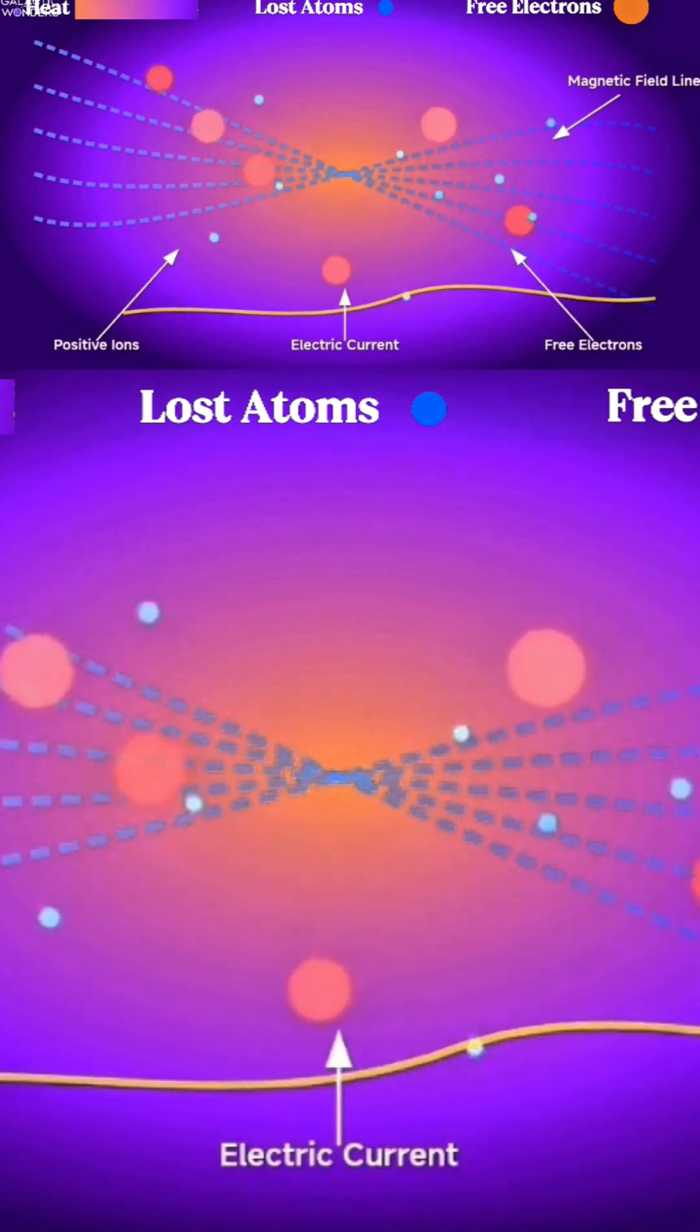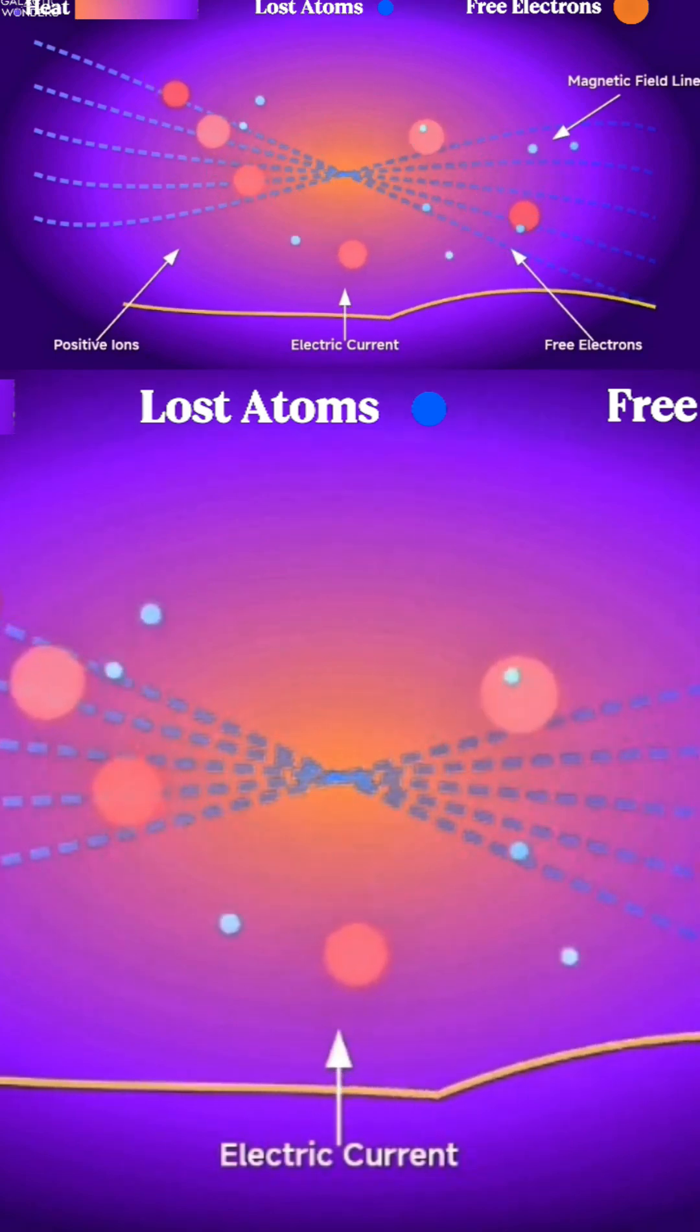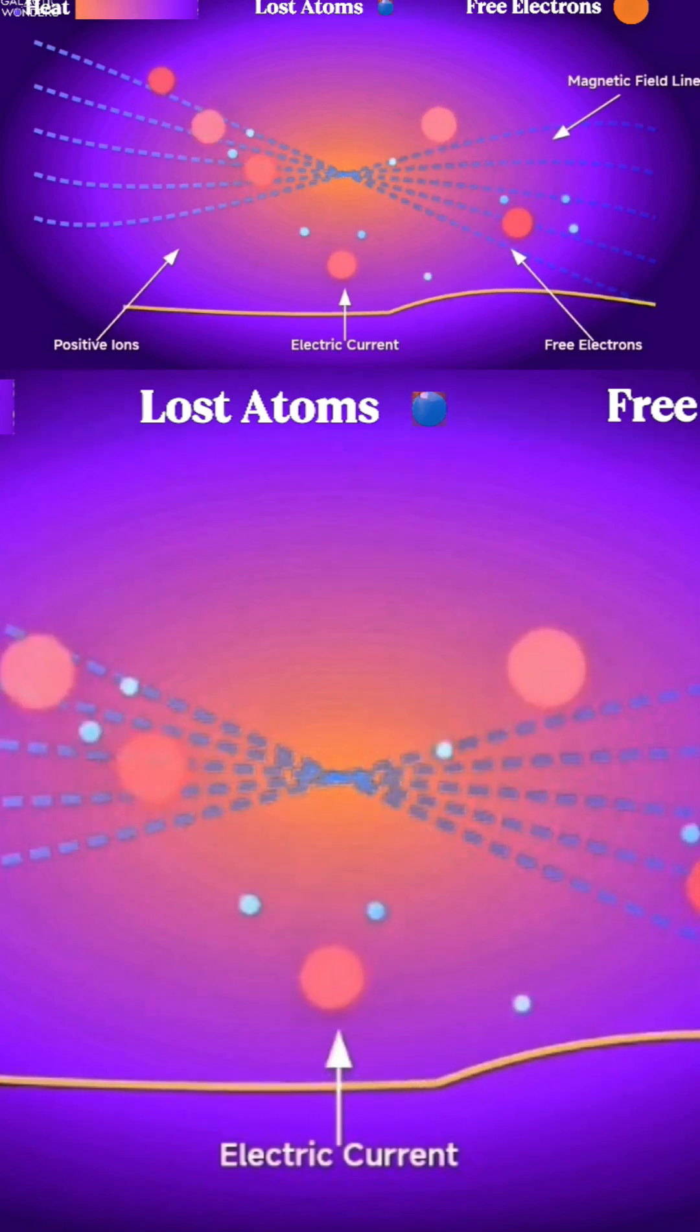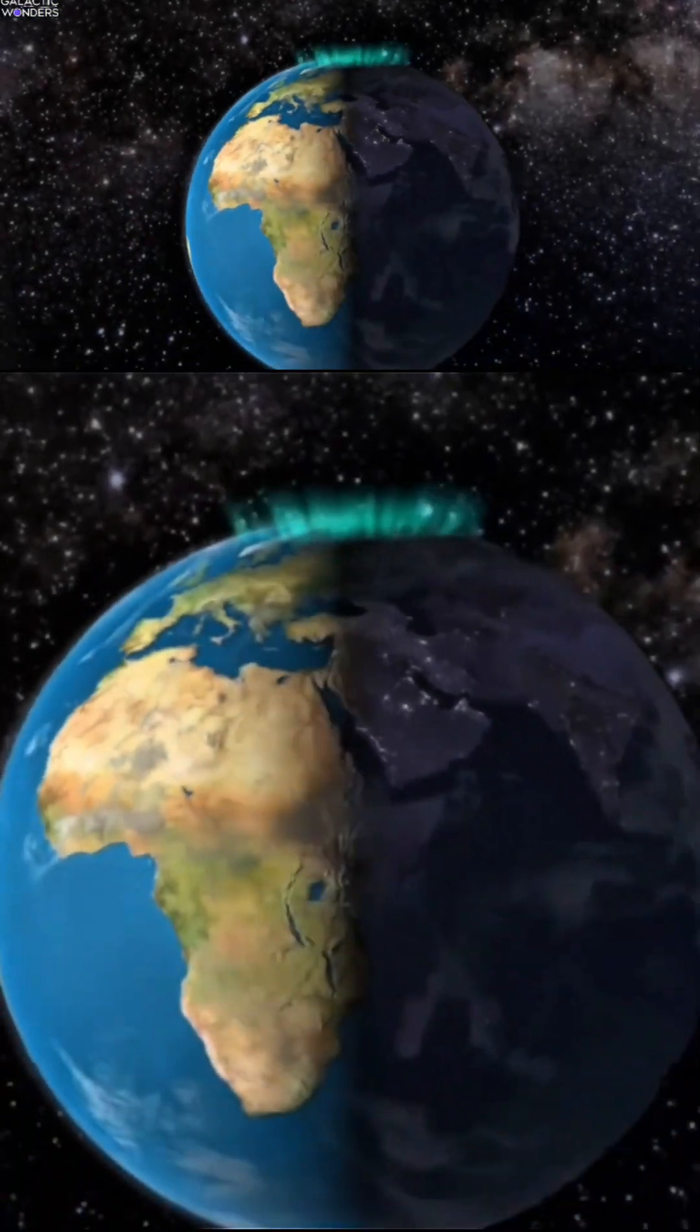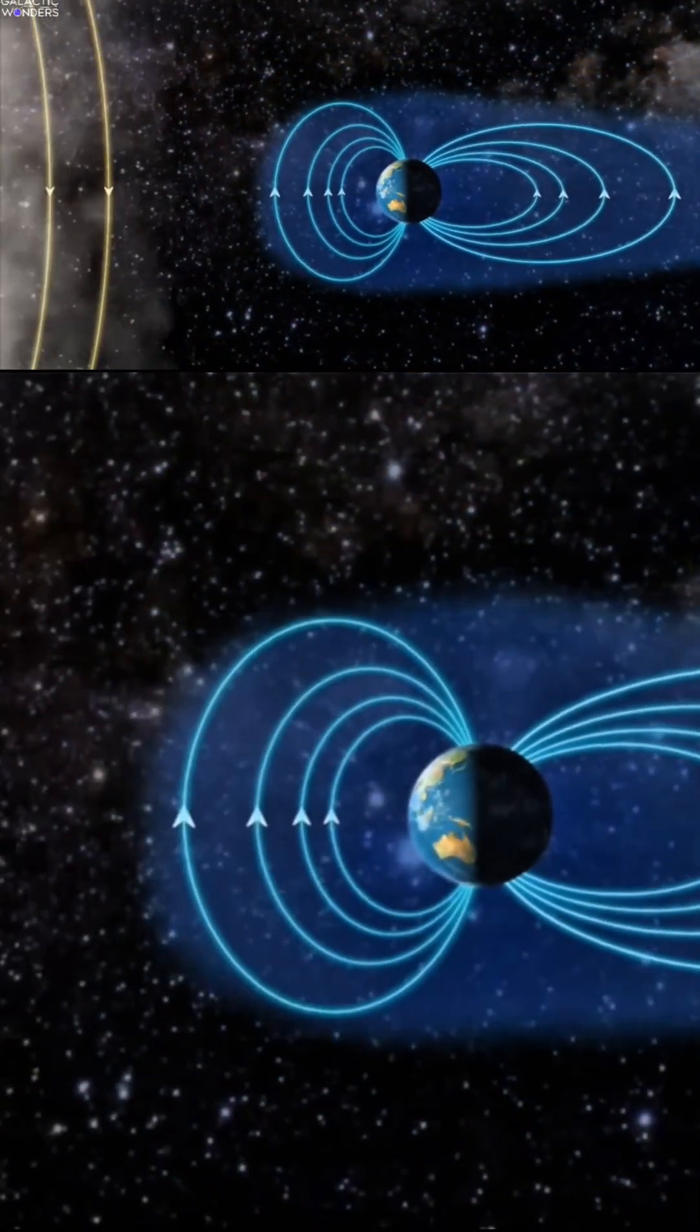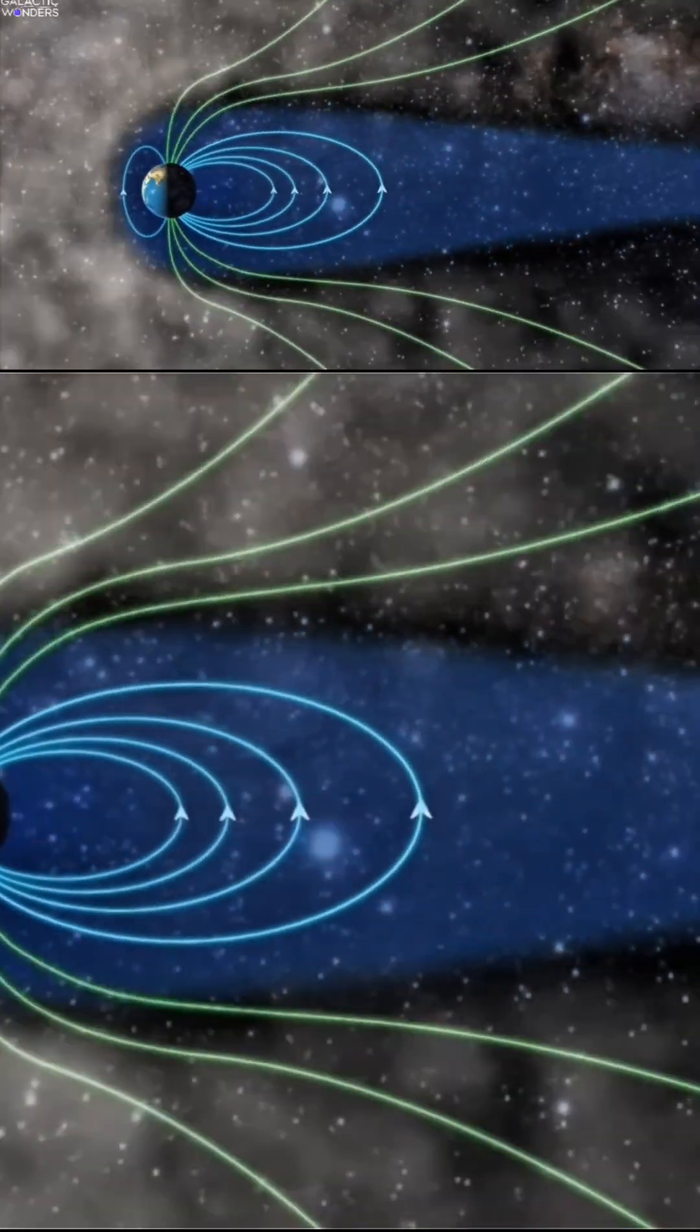It conducts electricity, responds to magnetic fields, and can even organize itself into complex structures. Those gorgeous aurora lights dancing in the polar skies—that's plasma putting on a light show when solar wind hits our magnetic field.